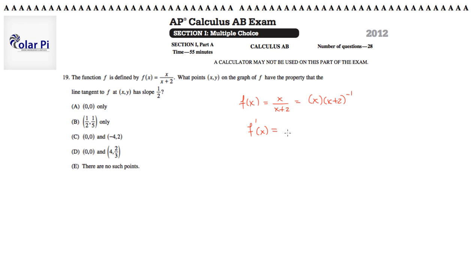f prime of x. I'm just a little lazier than you. By the product rule is the derivative of that, which is 1, times this function, which is x plus 2 to the negative 1, plus this, which is x, times the derivative of this fella, which is negative 1 times x plus 2 to the negative 2. And I'm done.